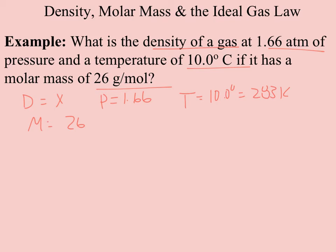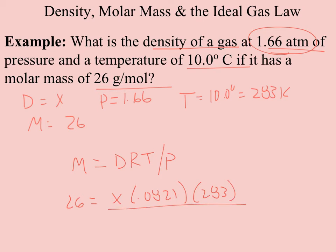So when I'm trying to find the correct equation for this, I've got D, P, T, and M. And I only have one equation that includes D in it. And that is M equals DRT over P. So I'm going to go ahead and plug into this. I've got 26 equals X. R depends on my pressure. It's still in atmospheres. So this is going to be 0.0821. My temperature I change to 283. And my pressure is 1.66.